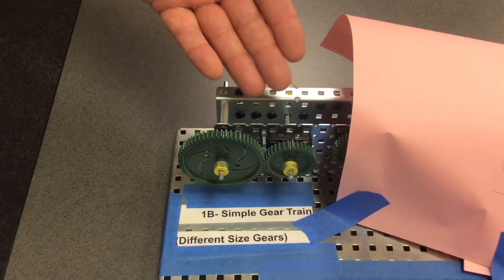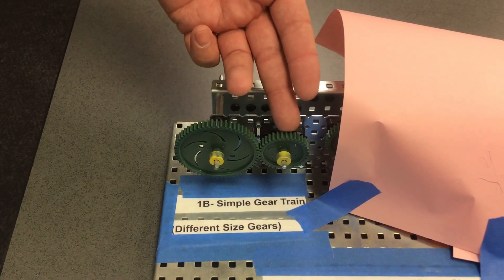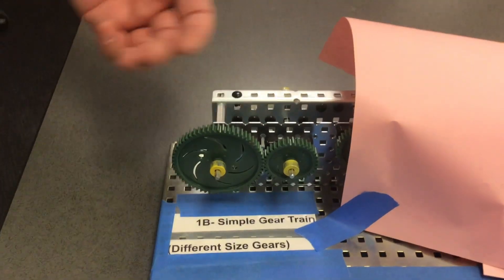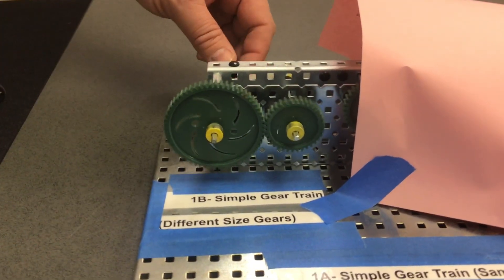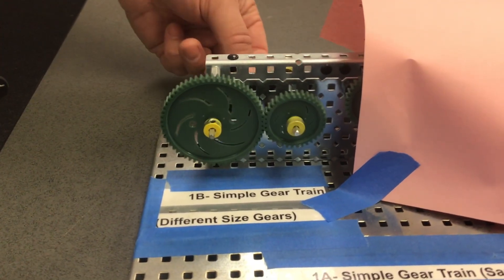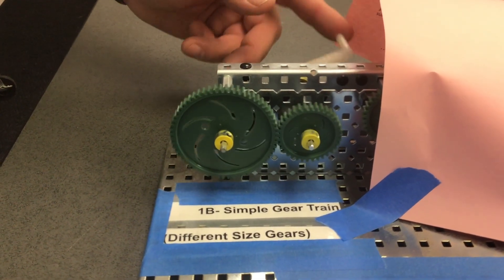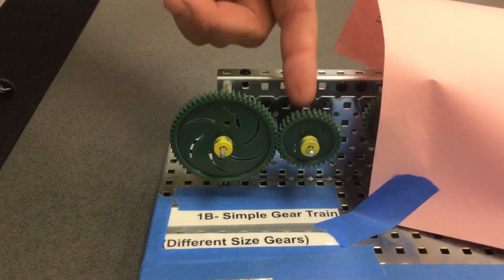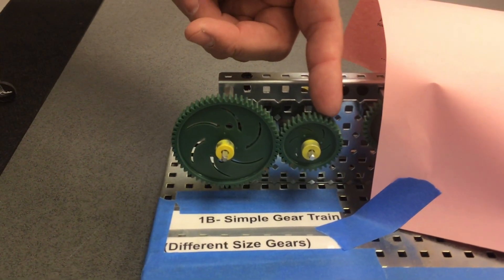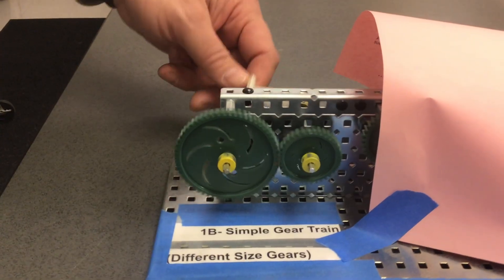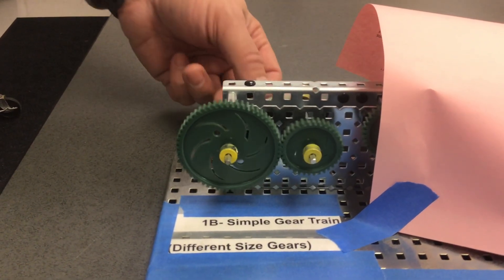On this particular arrangement, we have the smaller gear connected to the larger gear. Notice that the type of movement is rotary, they are touching, and one goes clockwise while the other goes counterclockwise.